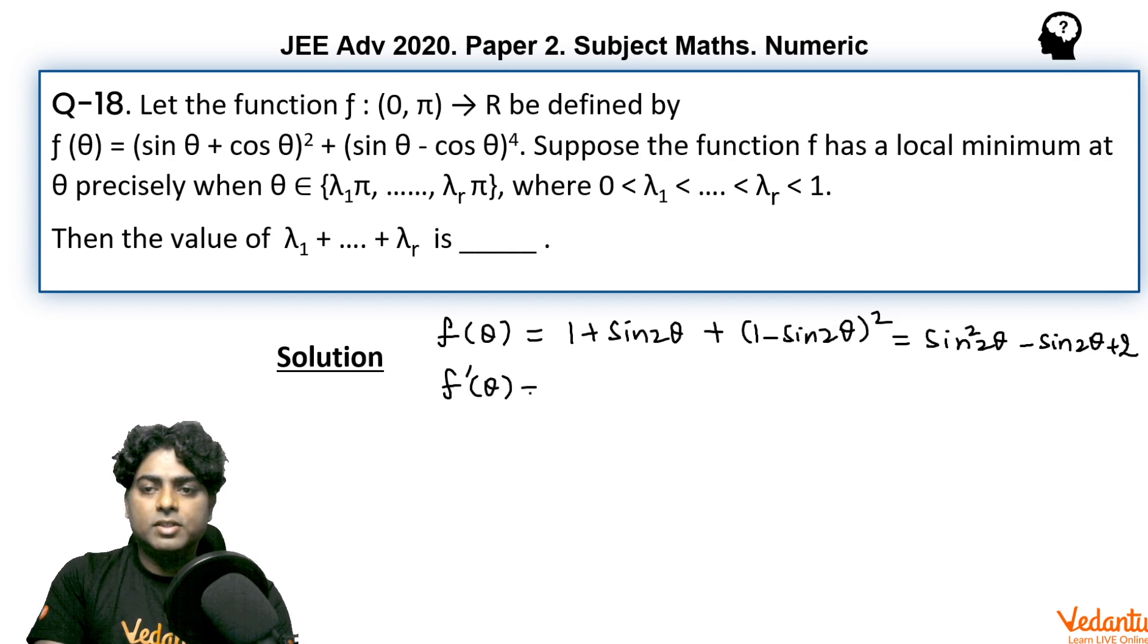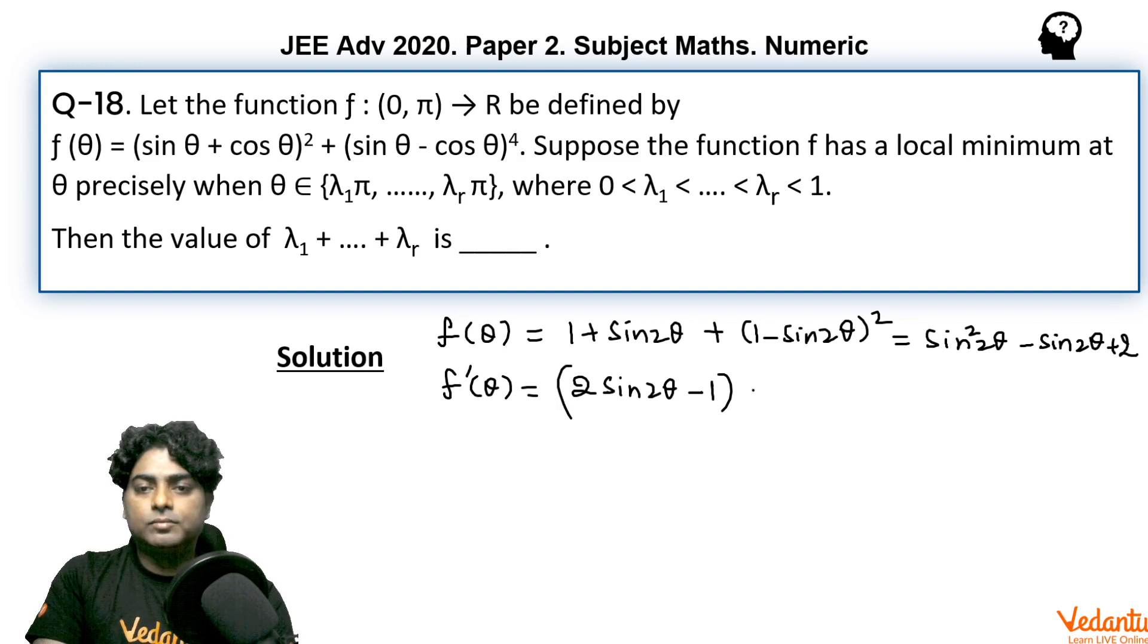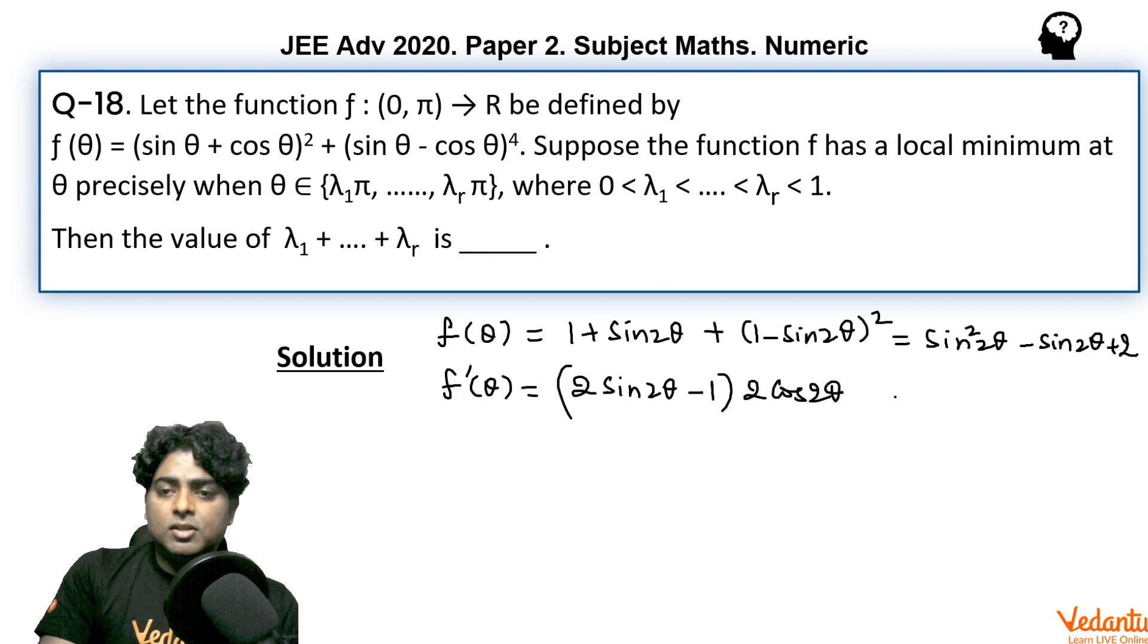Now if we go for the derivative of this function, we'll get 2 sin 2θ · 2 cos 2θ by chain rule, minus 2 cos 2θ. So I am taking 2 cos 2θ as common: 2 cos 2θ(2 sin 2θ - 1). The range of θ, the interval for θ, is 0 to π, so going for the sign scheme of f' at different θ.